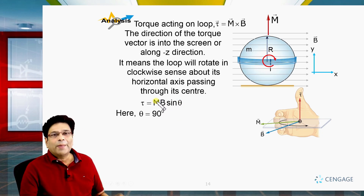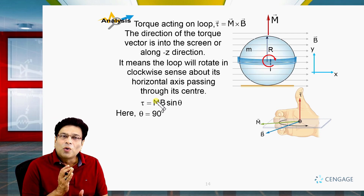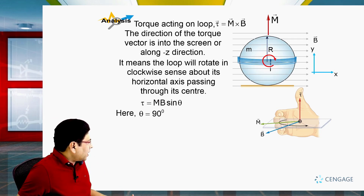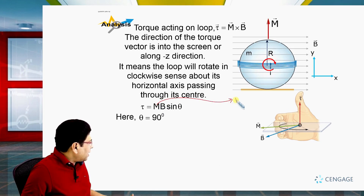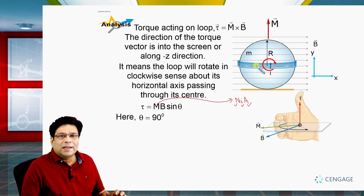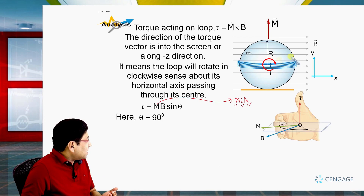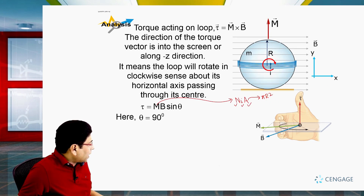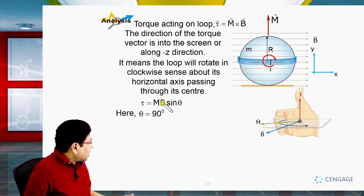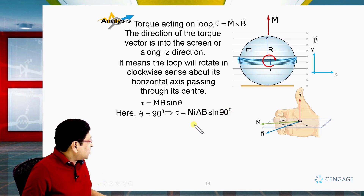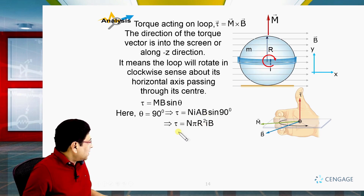M is the magnetic dipole moment, equal to NIA, where N is the number of turns, I is the current, and A is the area enclosed by the loop. This is a circular coil with radius R, so the area equals πR². Therefore the torque can be written as: torque = N × I × πR² × B. This is the torque.